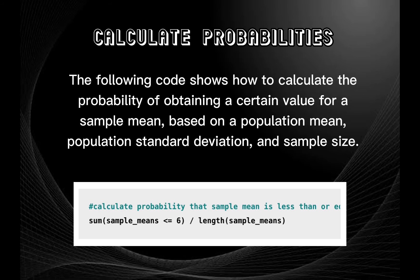The following code shows how to calculate the probability of obtaining a certain value of a sample mean based on population mean, population standard deviation, and sample size.